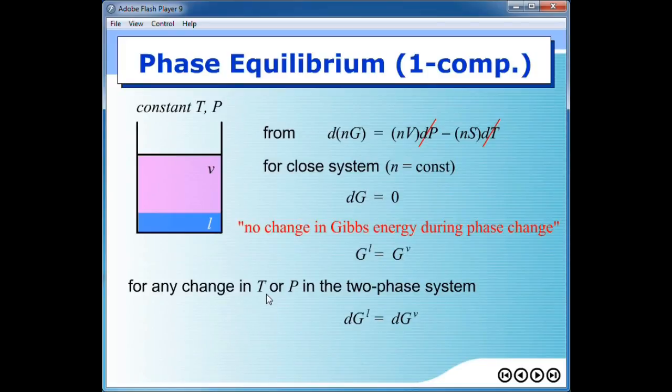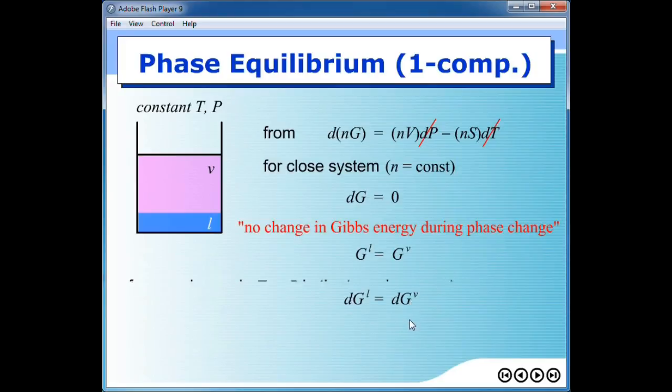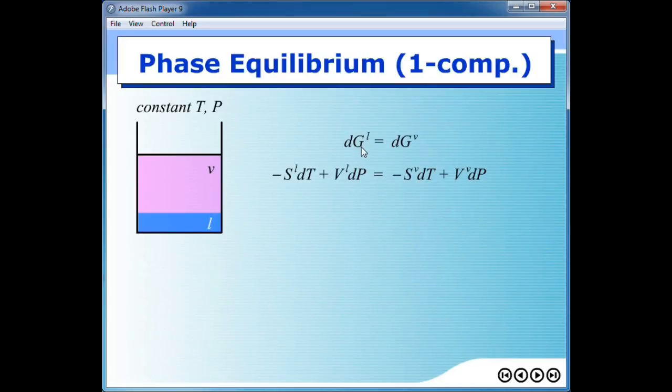So for change in temperature or pressure in two phase system, let's say we have the system here, two phases, and then we change either temperature or pressure. Then Gibbs free energy would be changed because of the change in temperature or pressure. But the change in Gibbs free energy on one side of the system would be the same as the change in Gibbs free energy of the other side. So dG of liquid phase would be equal to dG in vapor. Then we use fundamental relation dG equal to minus SdT plus VdP written for liquid phase and vapor, you can get this relationship.